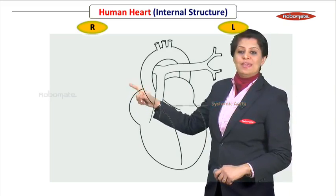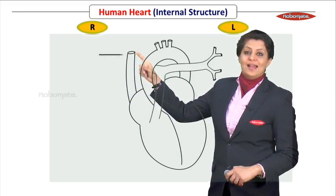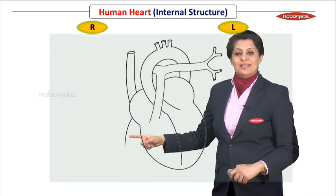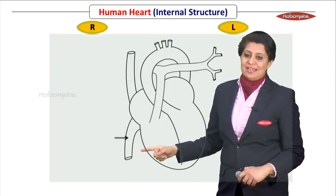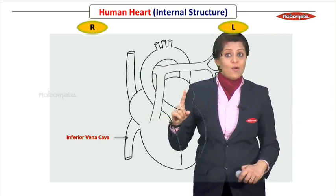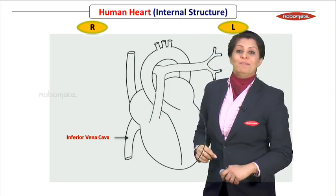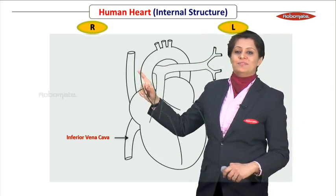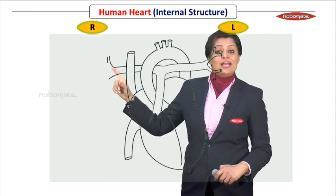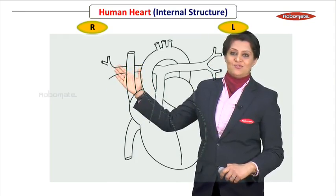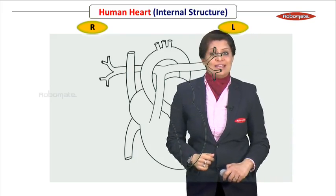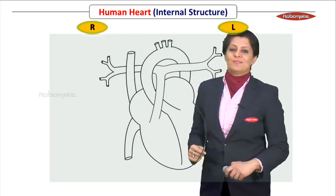Draw the superior vena cava, and once that is done, draw the inferior vena cava below. After drawing both the superior and inferior vena cava, complete the pulmonary trunk's right side. Here, the right pulmonary artery branches beautifully just like the left side. This completes the pulmonary trunk on both sides.